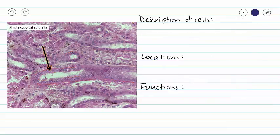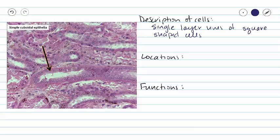Now let's take a closer look at our simple cuboidal epithelium now that we understand the name. Here we see the same picture and in our description of cells, we can say that we have single layer lines of square shaped cells. Our nucleus is going to be beautiful and round and right in the middle of the cell.